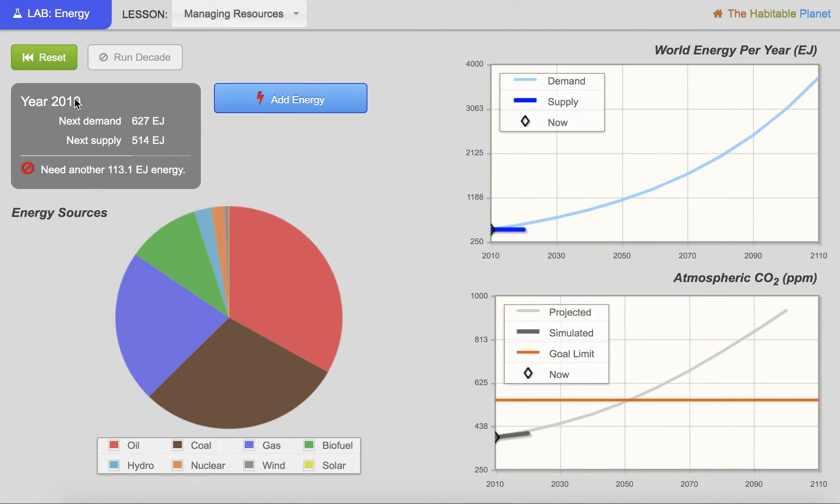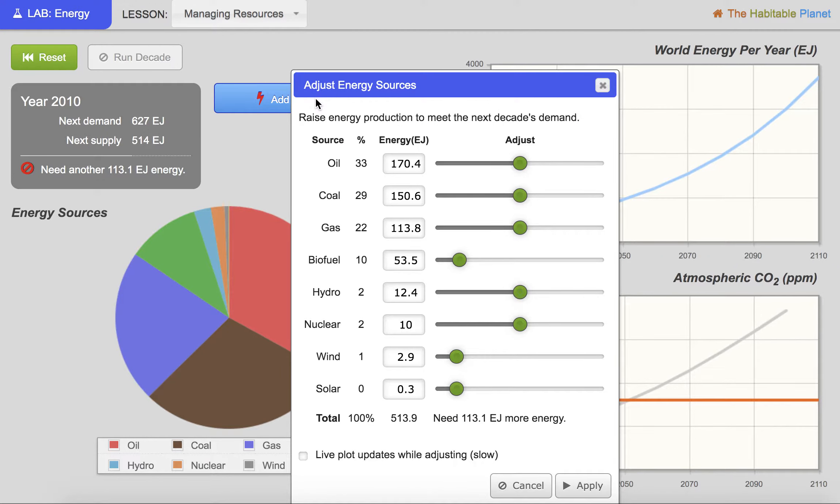So first things, we are in the year 2010, which was a decade ago, but that's cool. We're going to work from this anyway. So click on this add energy button, and this will show you all of the different things that you can add in terms of energy. Now in the next decade, we're going to need some more energy as you can see down here. And so I'm going to need to adjust these sliders in order to create that energy.